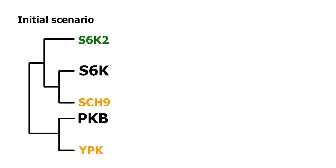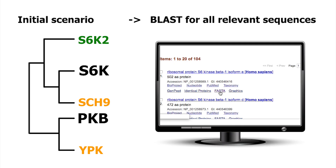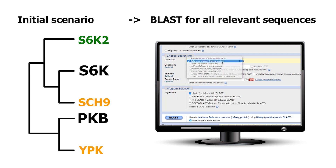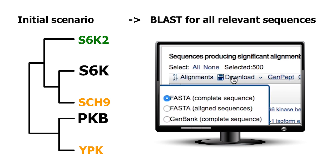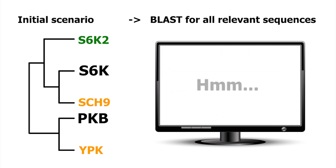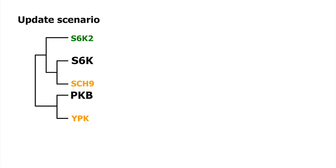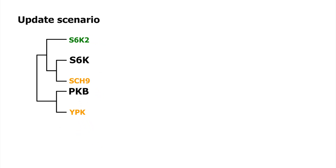Is this true? The first step is to determine if we have all the players. We need to perform BLAST to search all relevant sequences for S6K and PKB. Firstly, we find another yeast sequence that is quite similar to these proteins. Let's call it yeast unknown kinase, or YAK.